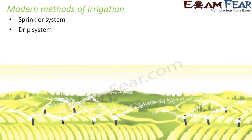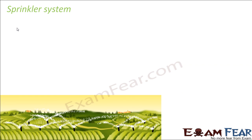We are going to discuss these two types of systems in detail to understand how these modern methods are able to overcome the disadvantages associated with traditional methods of irrigation. First we will discuss the sprinkler system, then the drip system. The name sprinkler comes from the word 'sprinkle' — spraying a small amount of water all around.